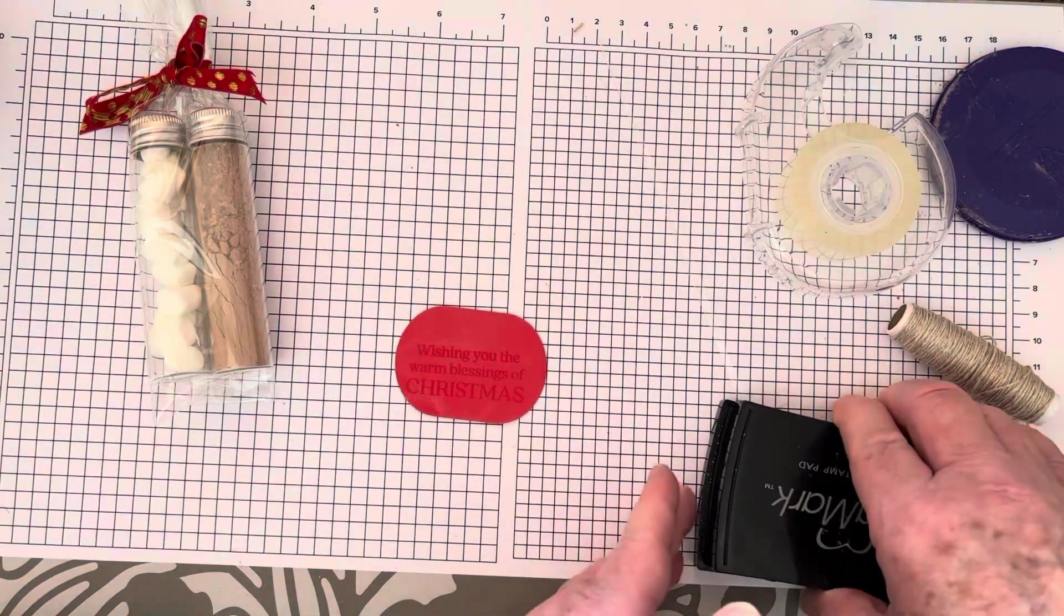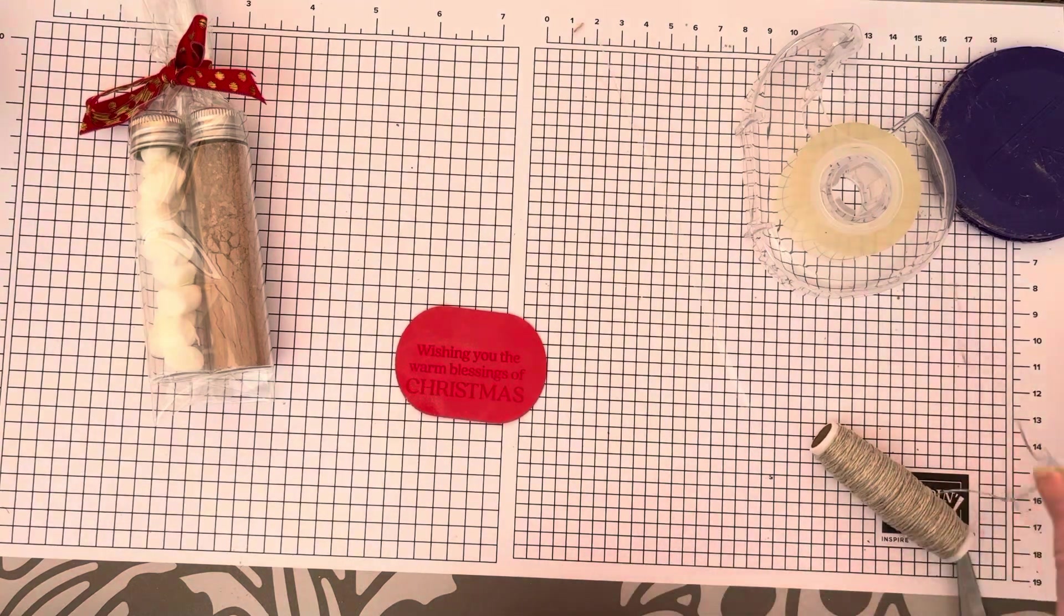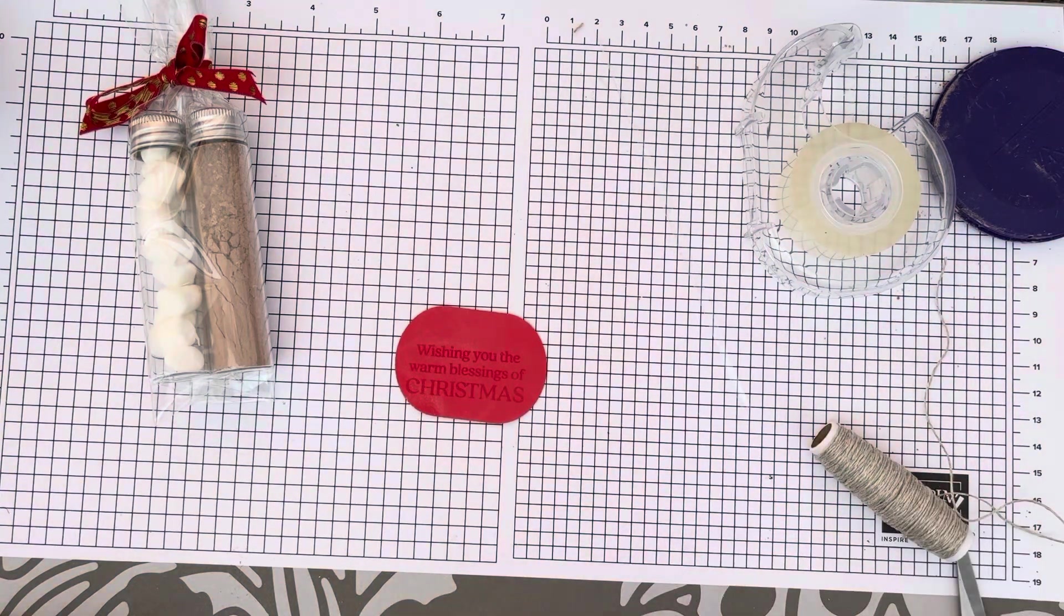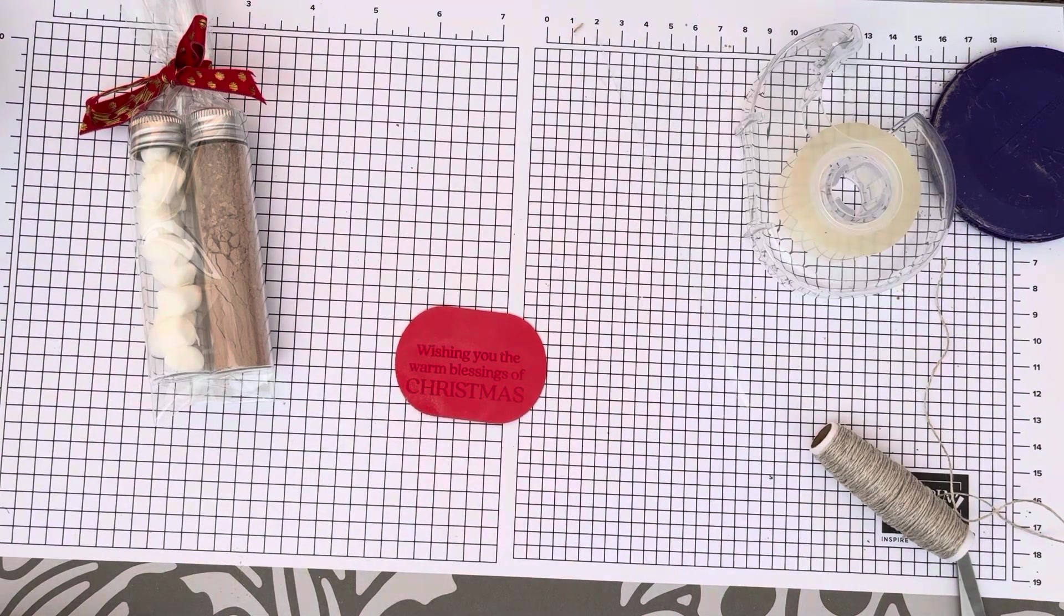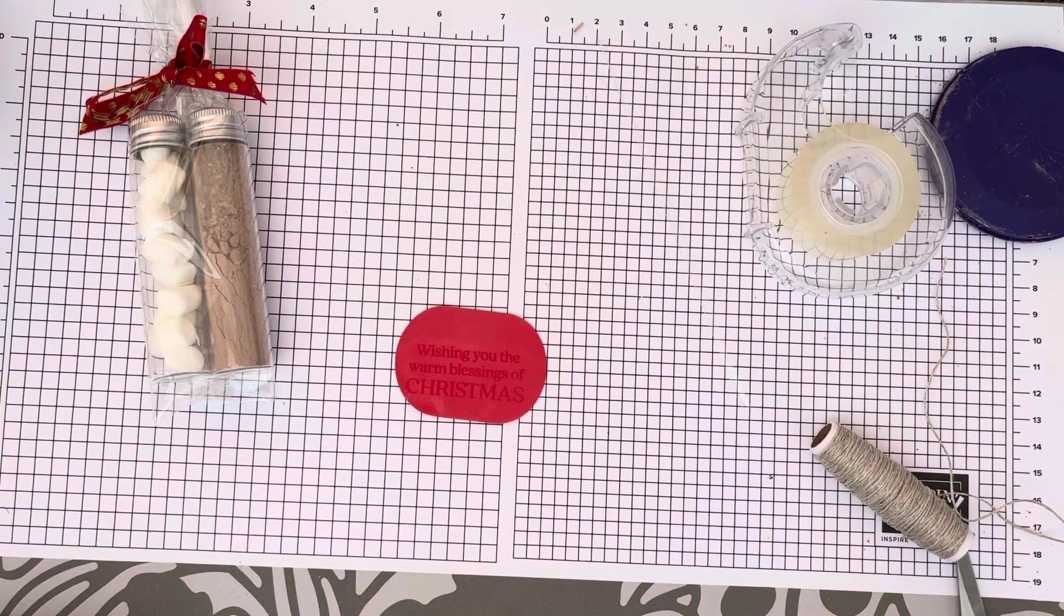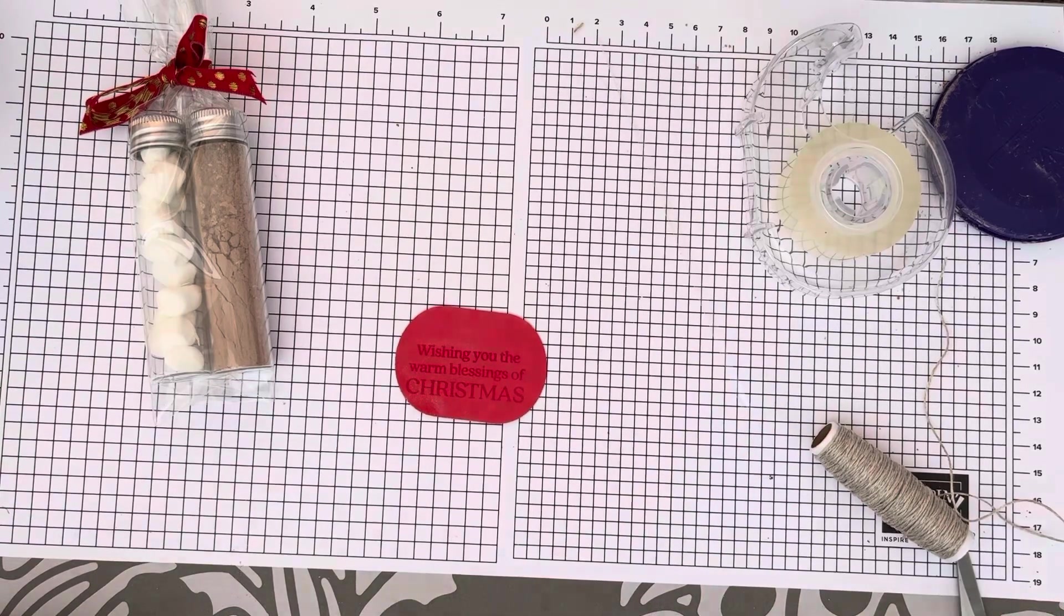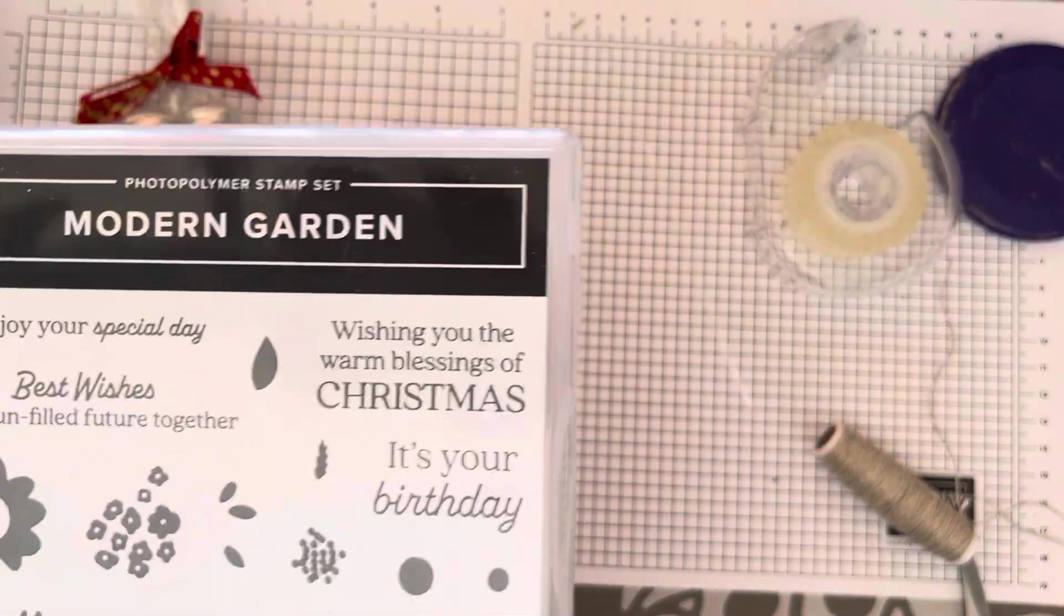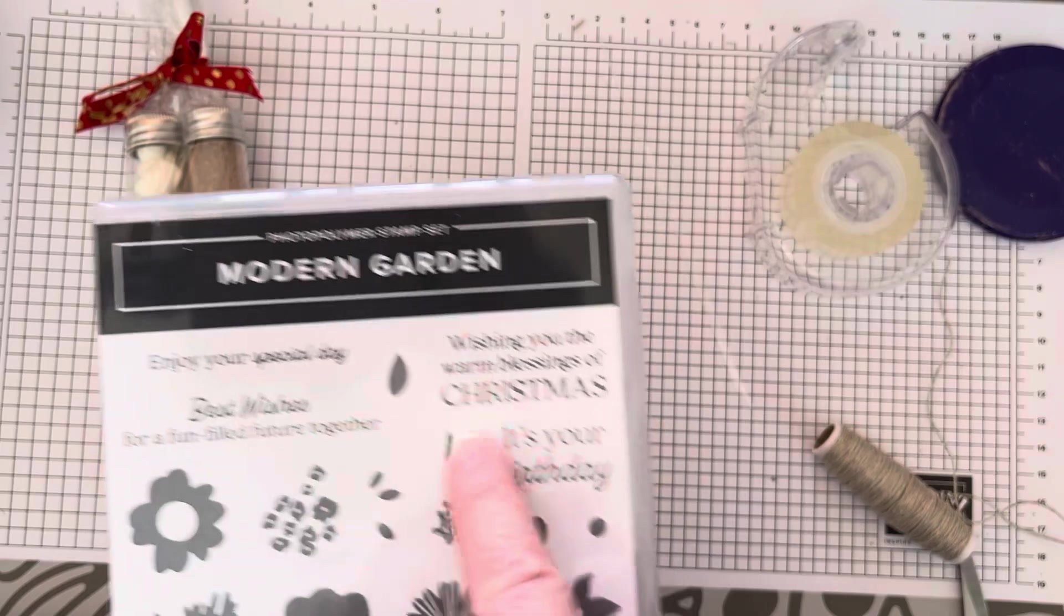That's where our embossing powder will sit on it now. That is a good thing, here it is! Oh I found it, it's from the modern garden, that's where this one comes from.